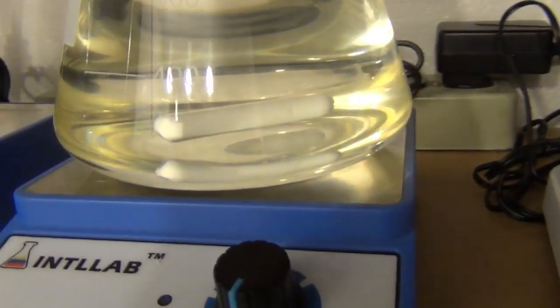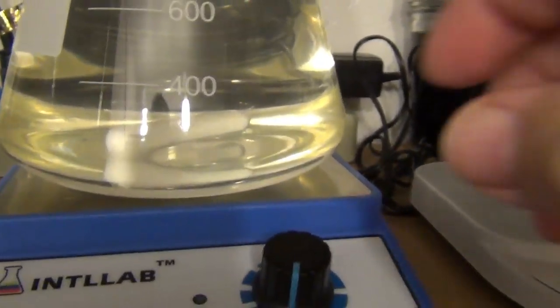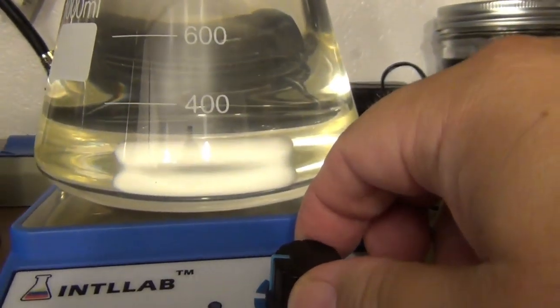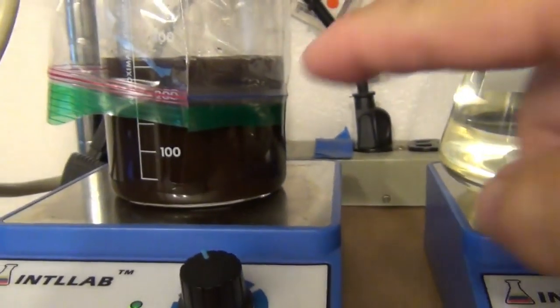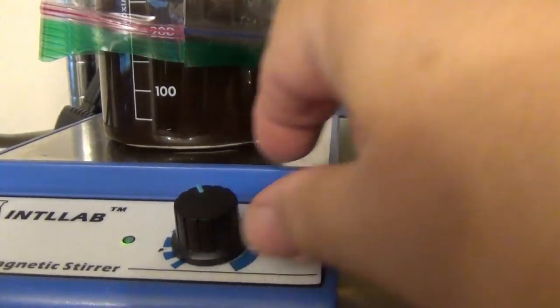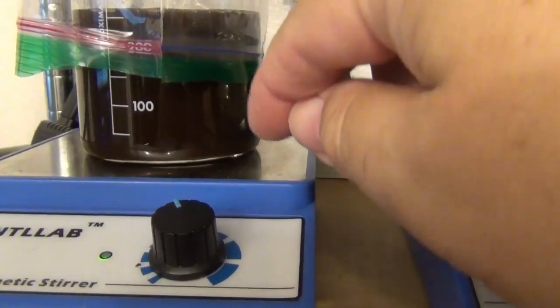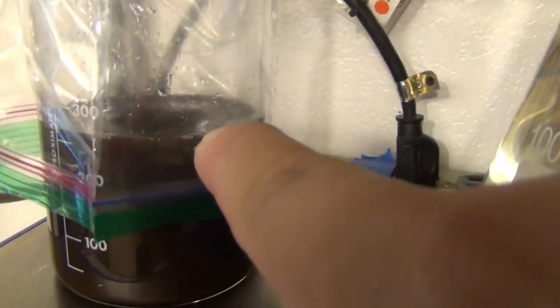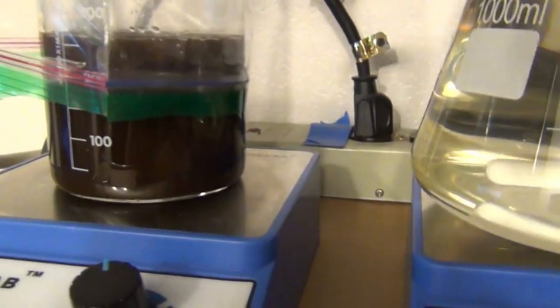So watch what happens when you take this giant monster bar and you turn the dial. I normally run the dial, like right now I'm stirring some MCT at about 11 o'clock, and you can actually turn it to about 2 o'clock and it'll still stir. But because it's MCT, it's like water.